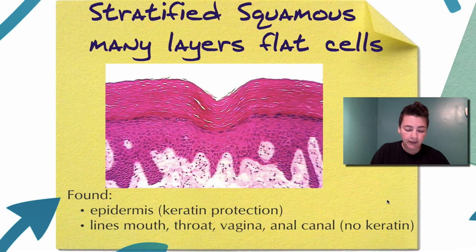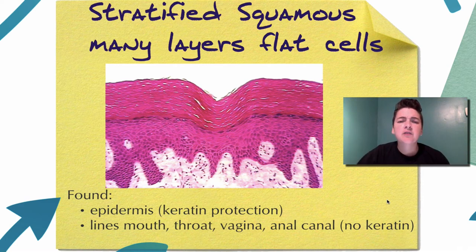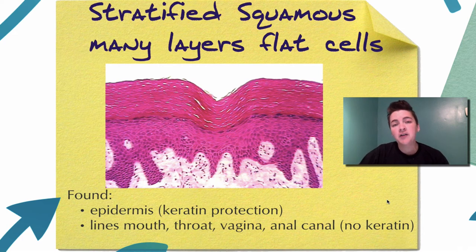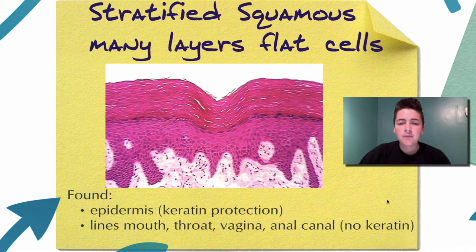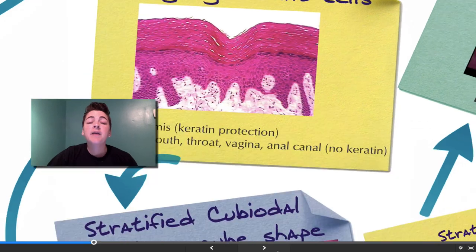These two locations differ in that the skin or epidermis has keratin — a hard protein that fills up the cells to make them more waterproof. The top layer of cells in the epidermis has keratin, whereas those lining the mouth, throat, vagina, and anal canal do not have that keratin, so they lack that waterproof protection — and they don't necessarily need it.